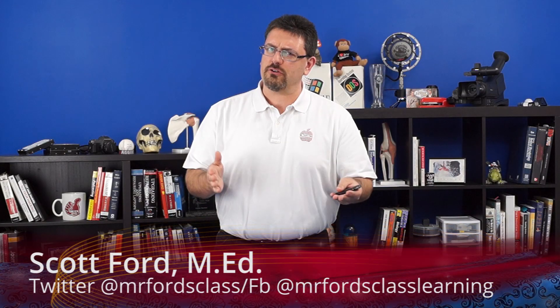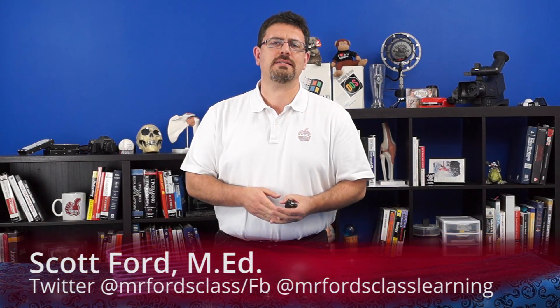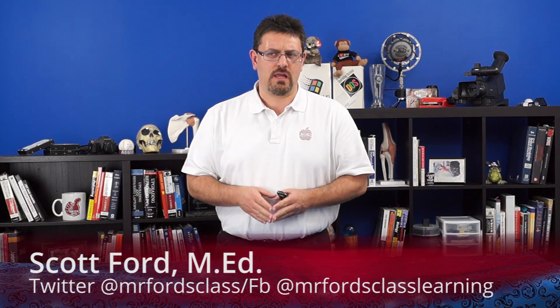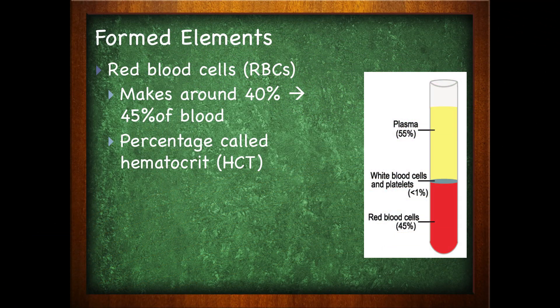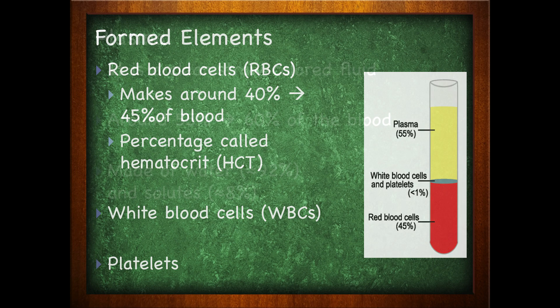In this video, I'm going to take a look at the formed elements as well as the plasma, the two big components that make up the blood. Formed elements are the solids within the blood. They are composed of the red blood cells, which makes up around 40% to 45% of blood. The percentage of red blood cells, or RBCs, is known as the hematocrit. We also have white blood cells, which deal with the immune response, and we have platelets, which deal with clotting.